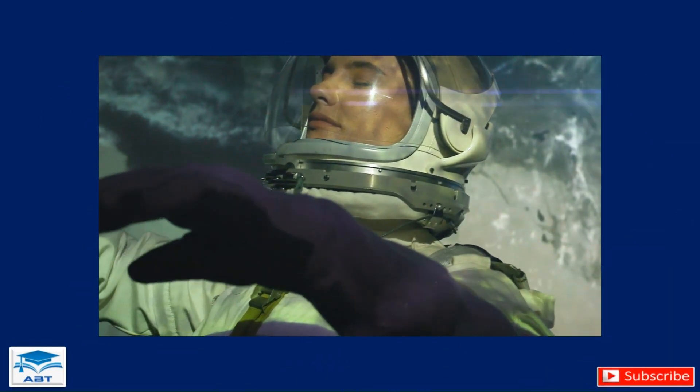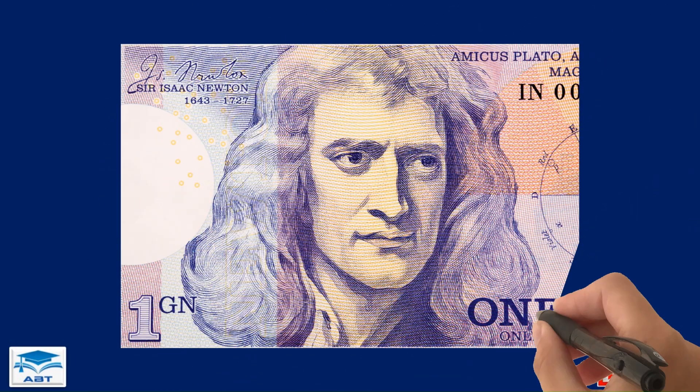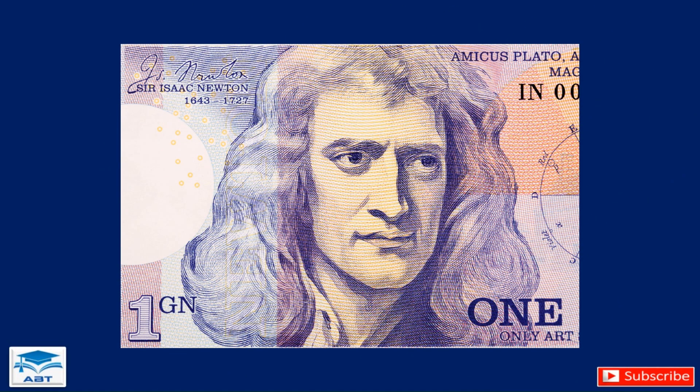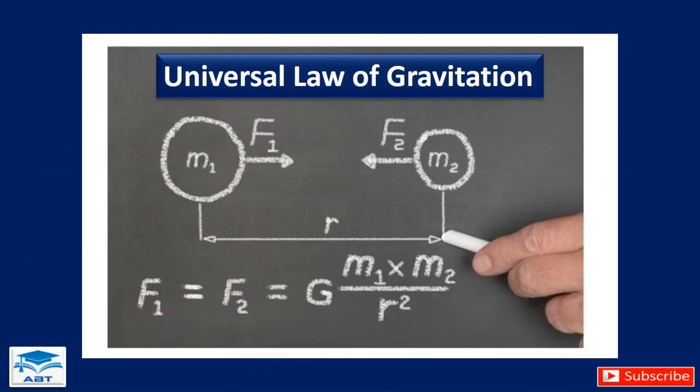The force of gravity was famously explained by Sir Isaac Newton. He came up with the universal law of gravitation, which tells us that every object in the universe attracts every other object with a force that depends on their masses and the distance between them.